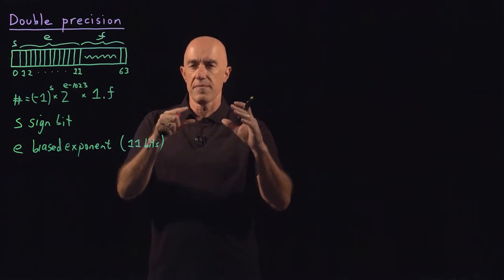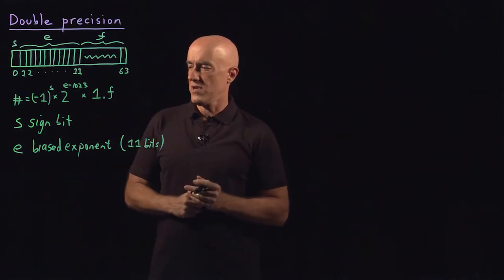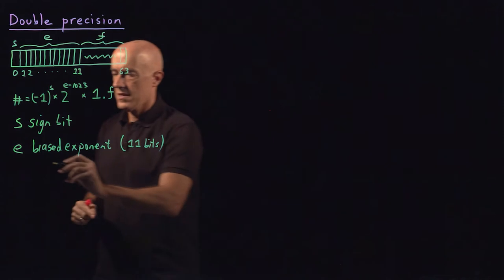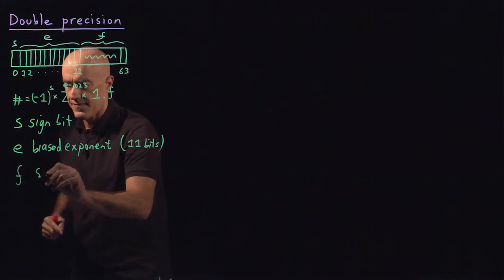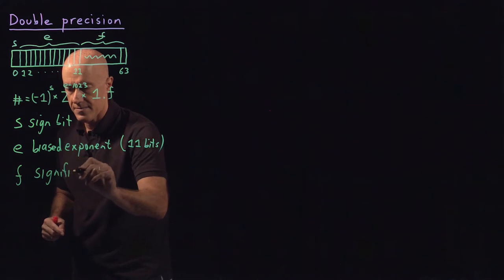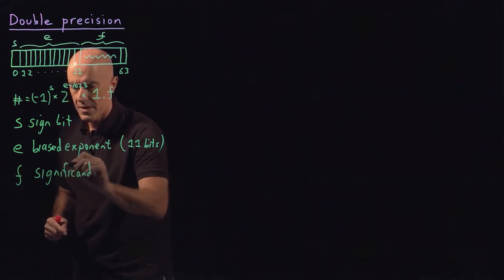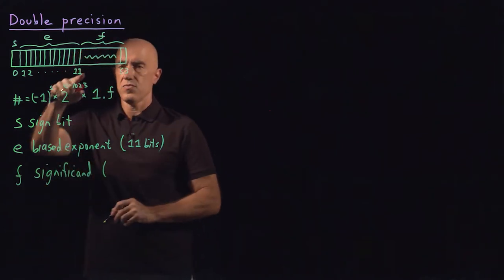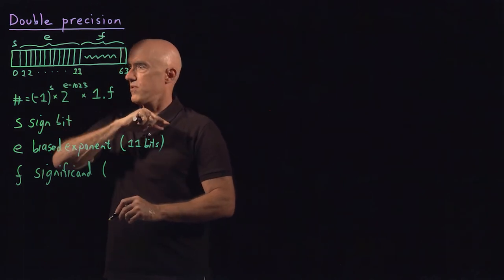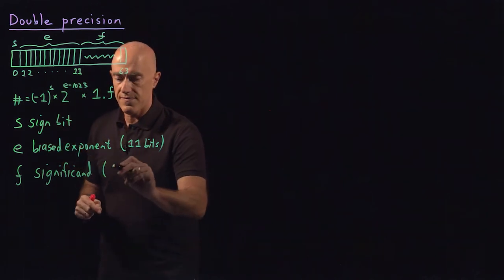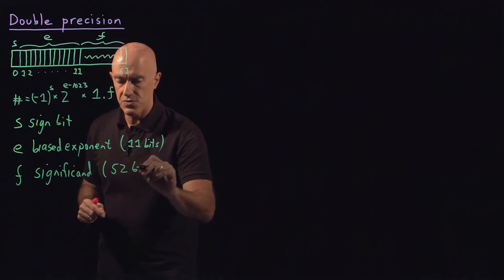So you want a very wide range of numbers. F is called the significand. And here we use the remaining number of bits, which is 52 left, 52 bits.